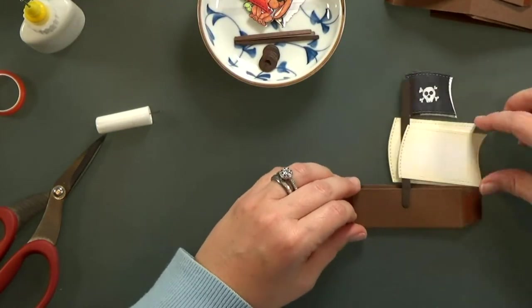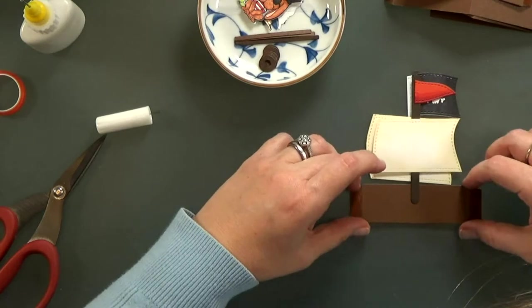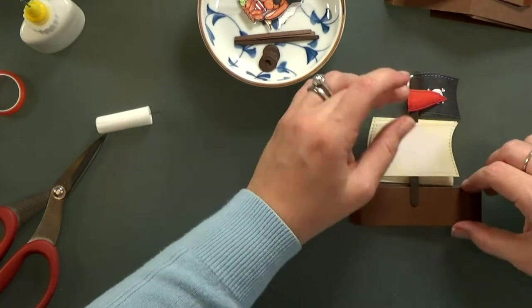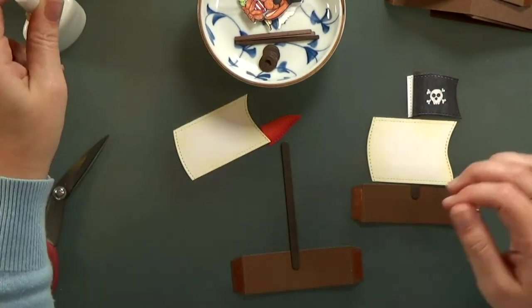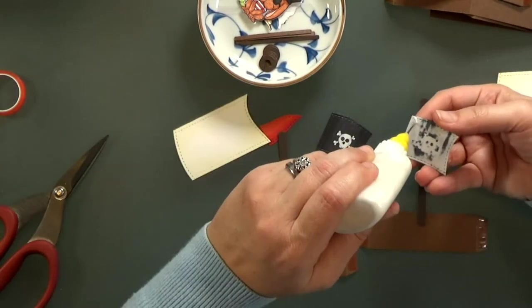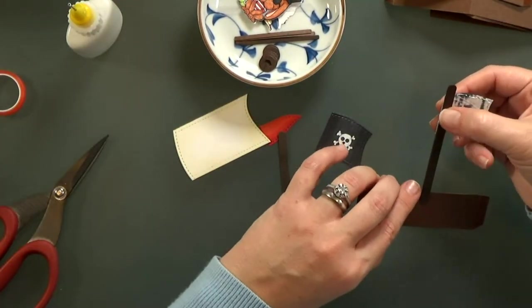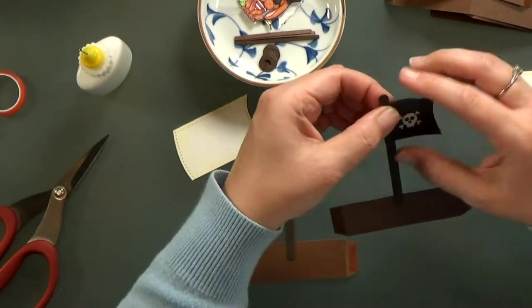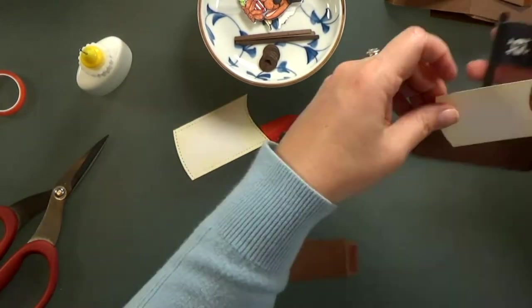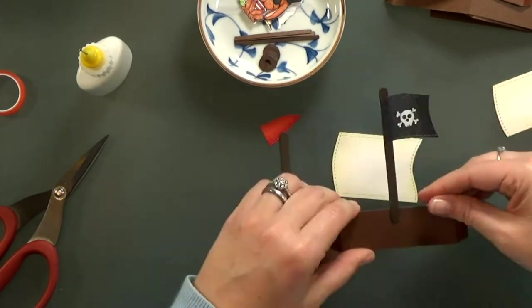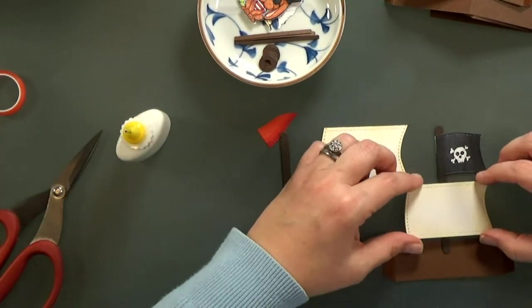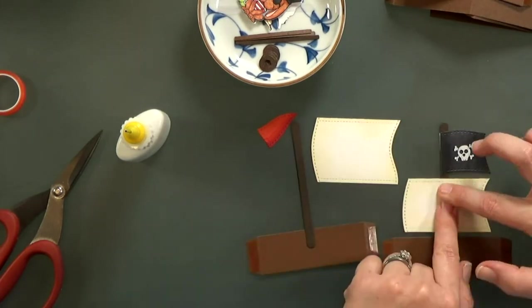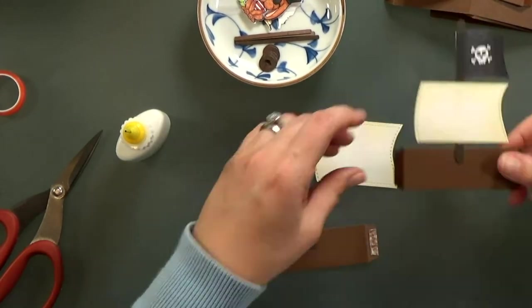Then I'll figure out my sail placement and the flags and I'm going to glue them in place with my PVA glue. It's starting to look like a ship.